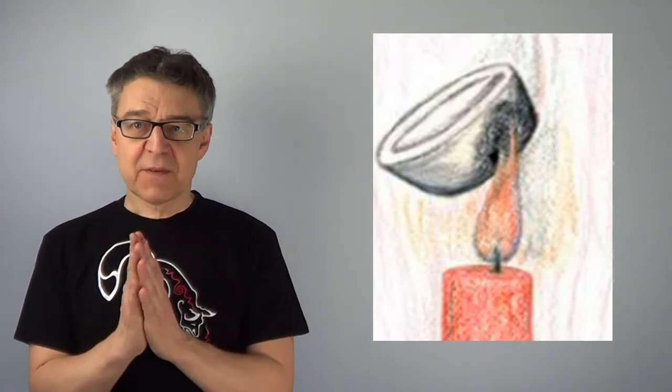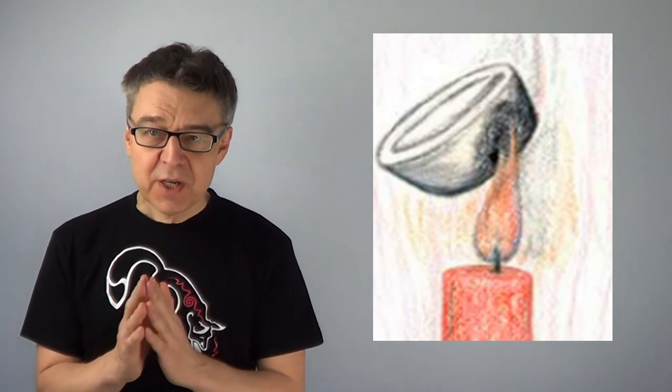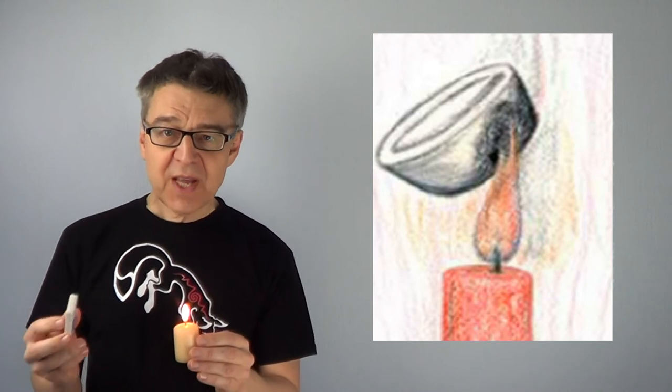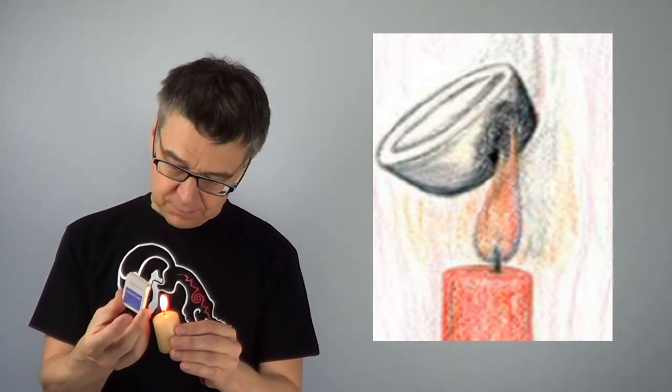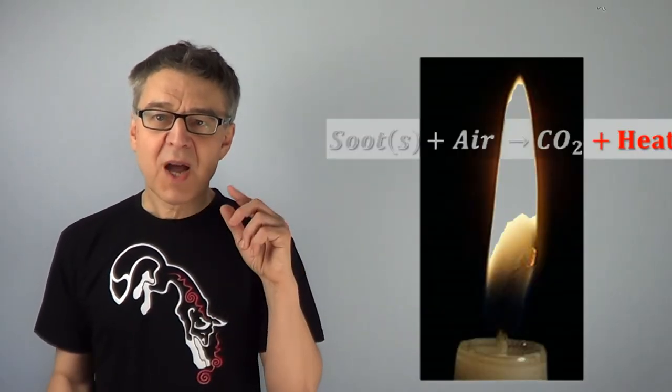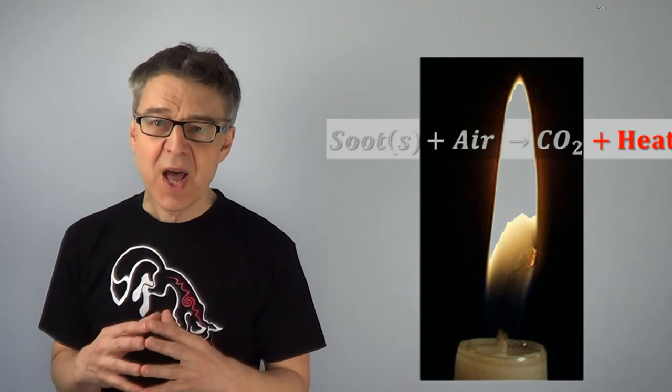You can show the presence of soot, for example, by holding a glass plate in the yellow zone of the flame or by deleting part of the flame with a wire mesh. At the edge of the yellow zone, the luminous glowing soot gets in contact with the air. There it reacts in a further exothermic chemical reaction to form carbon dioxide and more heat.